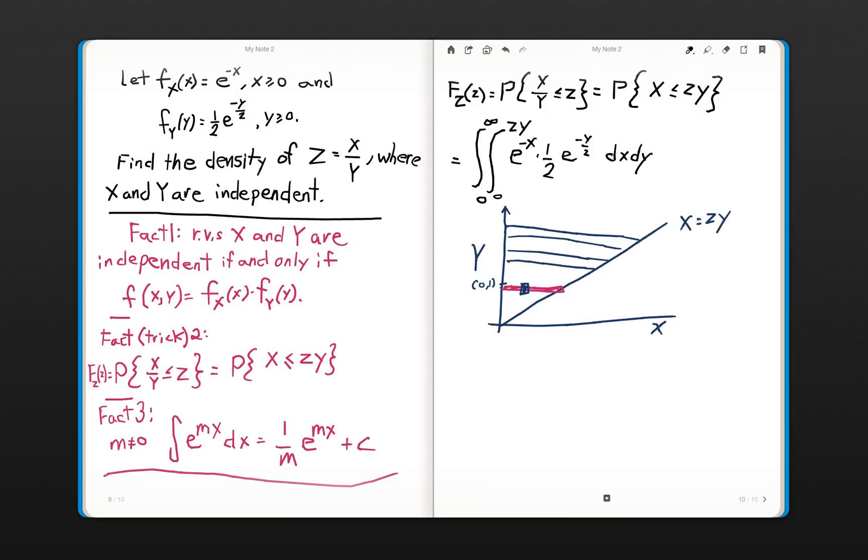So this actually goes up to Z times Y. So when X is 0, it integrates up to 0. But when, say, Y is 1, like right here, then X will go from 0 to Z. And so forth. And that's how X moves. So these are your limits of integration there. So then we can just continue on solving this double integral.